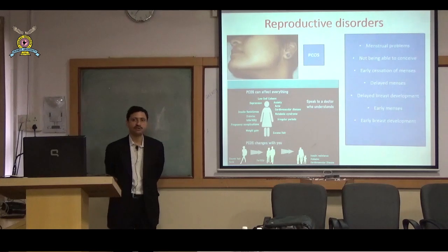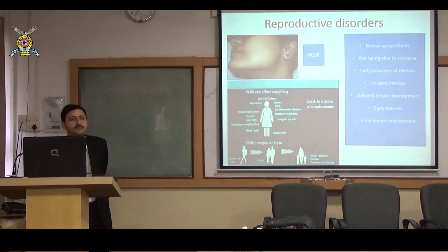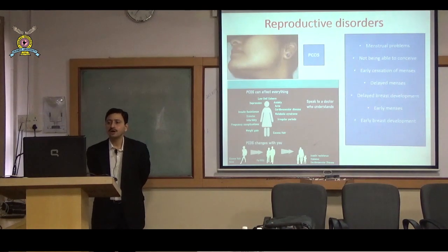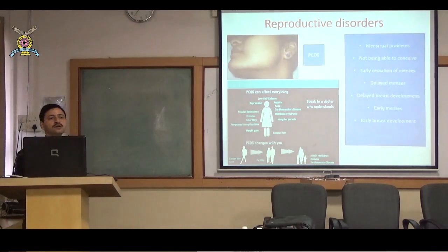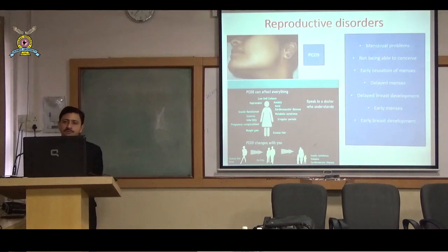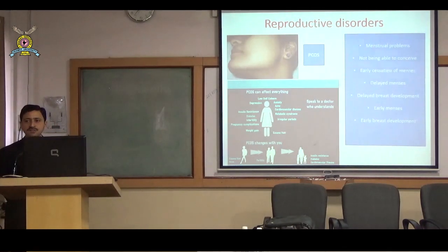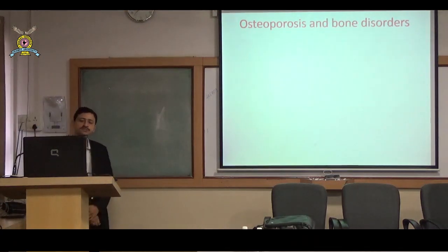Other menstrual problems — irregular cycles need not be only PCOS. Dysfunctional uterine bleeding can be due to hypopituitarism, hypothyroidism, or other causes. Infertility: many infertile patients have hormonal disorders that need early diagnosis. Premature ovarian failure requires discussion about hormone replacement therapy. Delayed menses due to delayed puberty — again hypopituitarism or premature ovarian failure. Delayed or early breast development and precocious puberty all fall under the endocrinologist's domain.